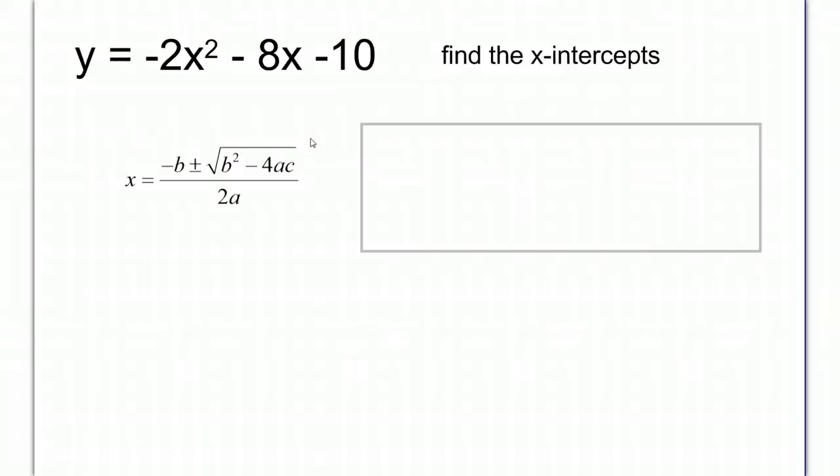In this problem up here, we want to find the x-intercepts. This is the place, or places, that it crosses the x-axis.